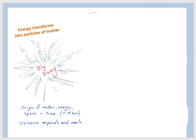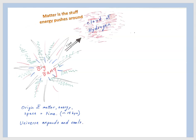In fact, Einstein's famous equation, E equals MC squared, shows us that matter and energy are two sides of the same coin. We can think of matter as the stuff that energy pushes around.